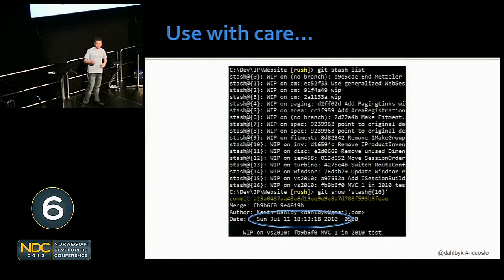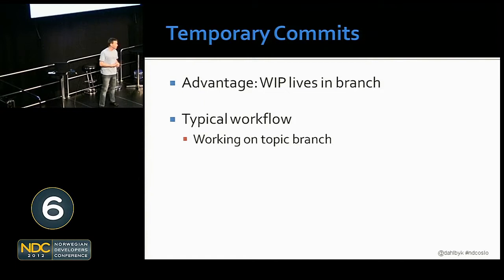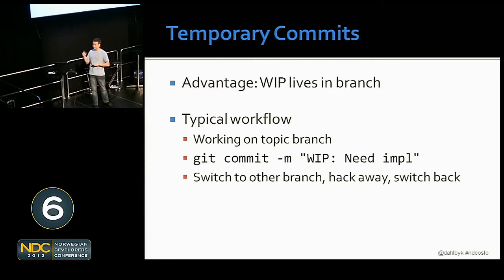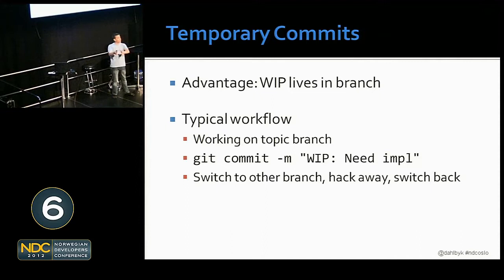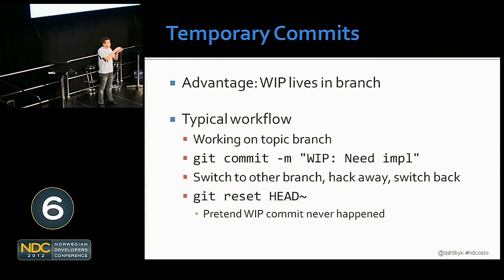A better option potentially is a temporary commit. You want your work in progress to live with the branch where it's work in progress. Working on topic branch, boss comes in — grab all your changes and commit them, naming it something useful like 'WIP: need an implementation for these passing tests.' Switch to your other branch, save the day. When you come back, switch to your topic branch — the changes are right there. Do `git new` to see everything since master, and your most recent commit is the WIP. Then just `git reset HEAD~` to undo that commit and pretend it never happened. If you have 10 different branches, you can have 10 different WIP commits.